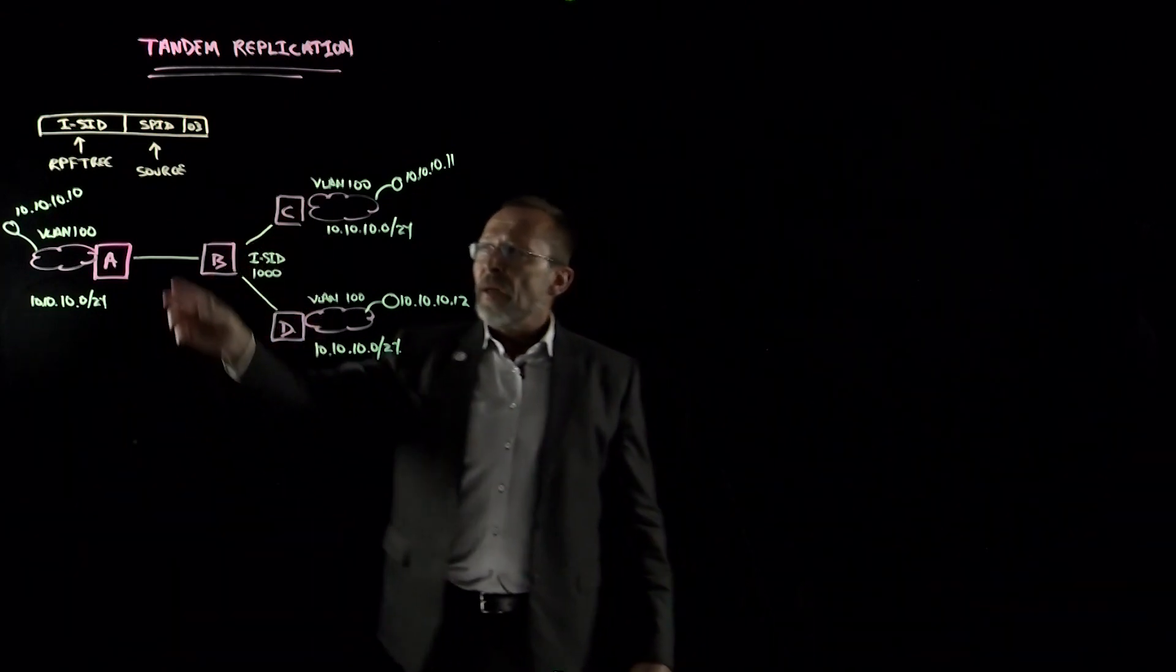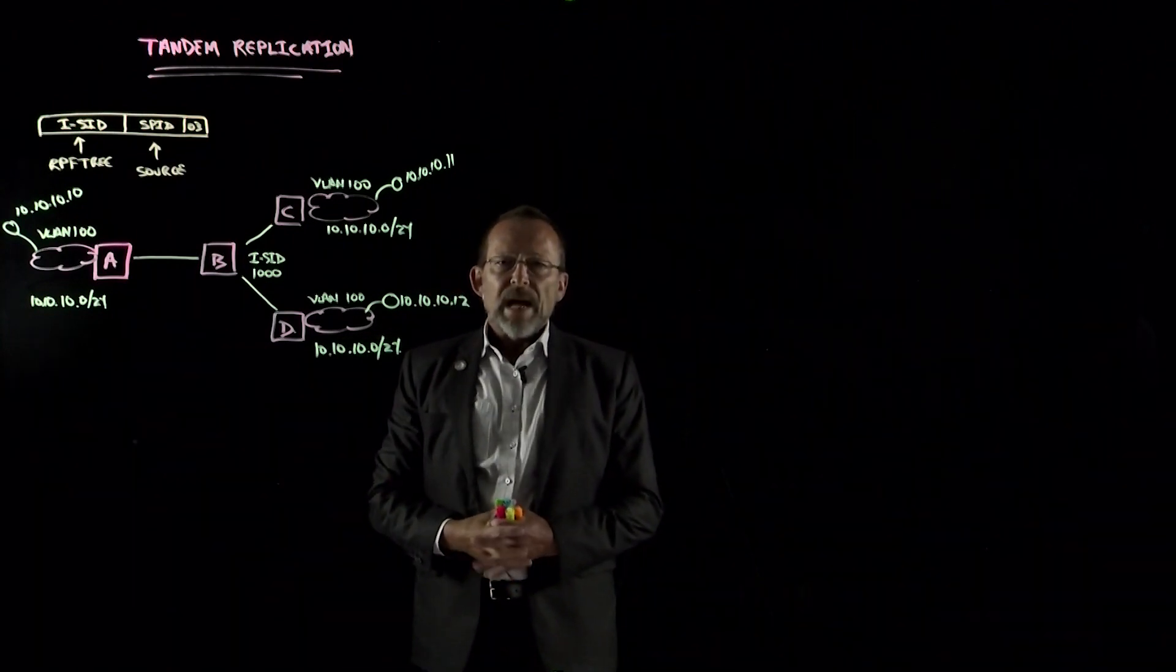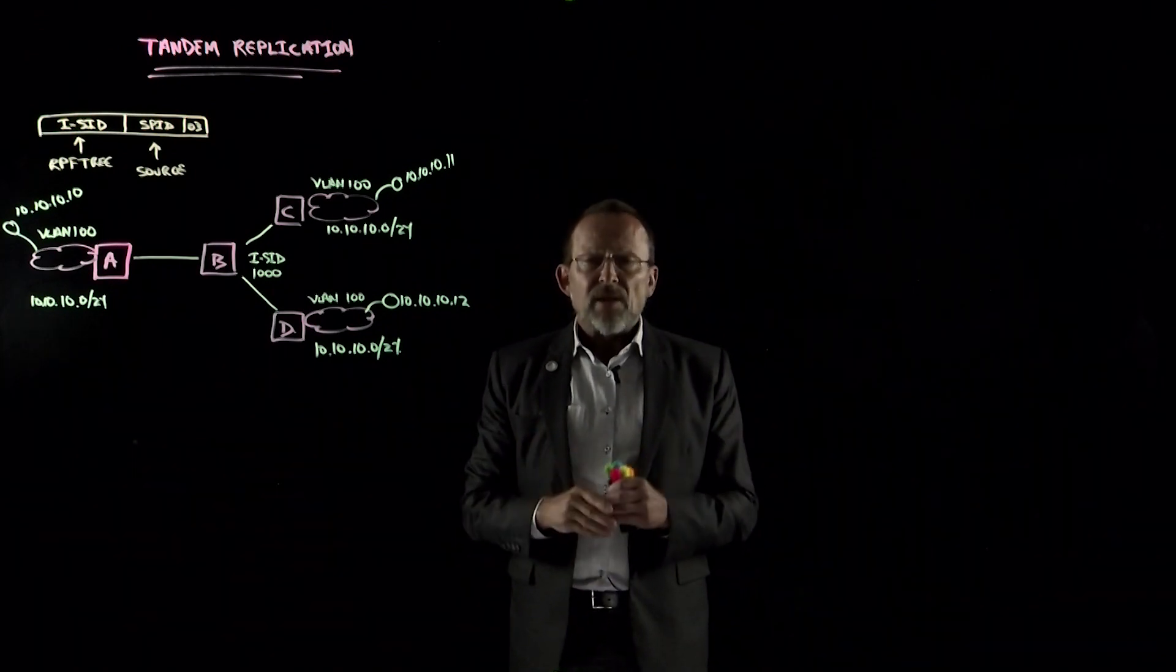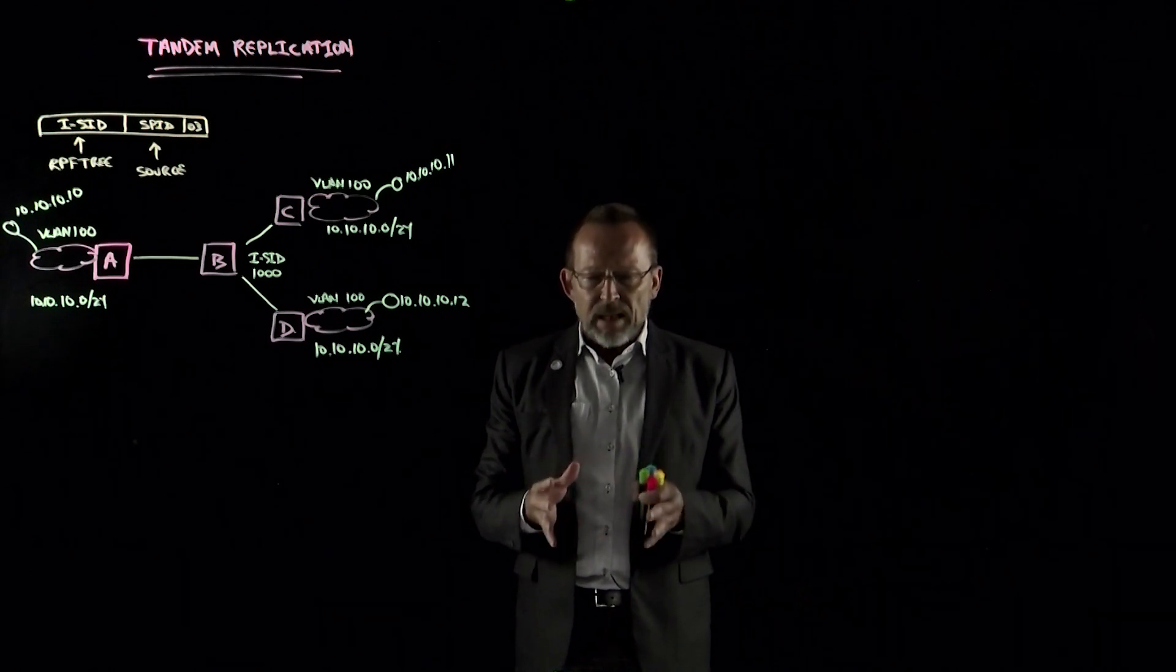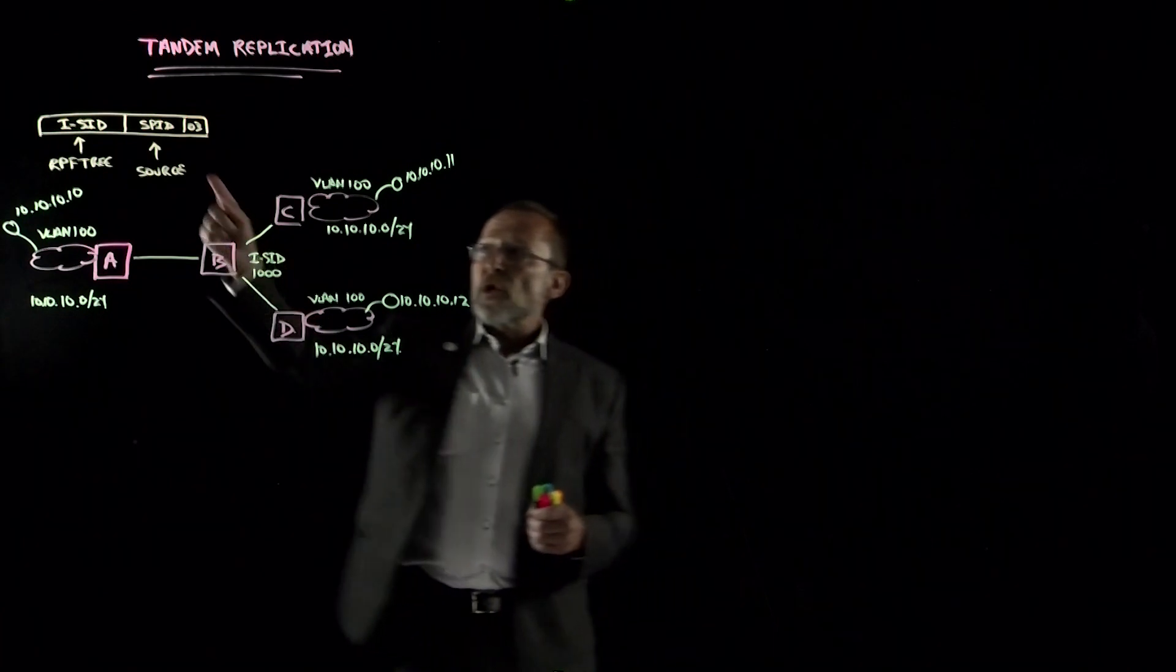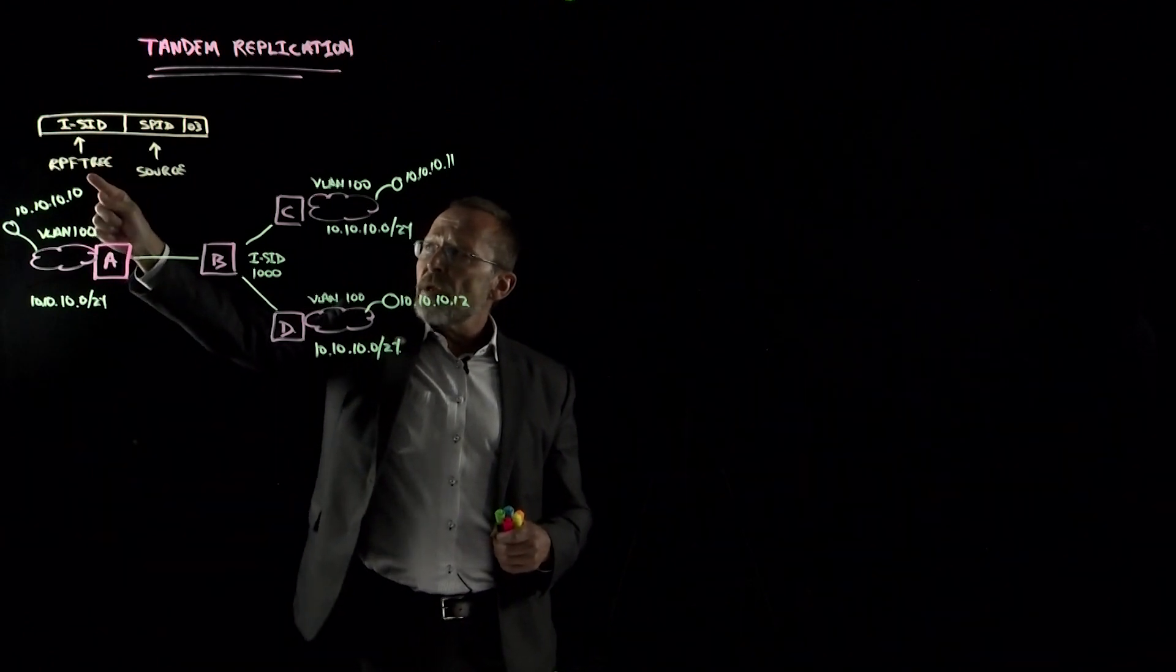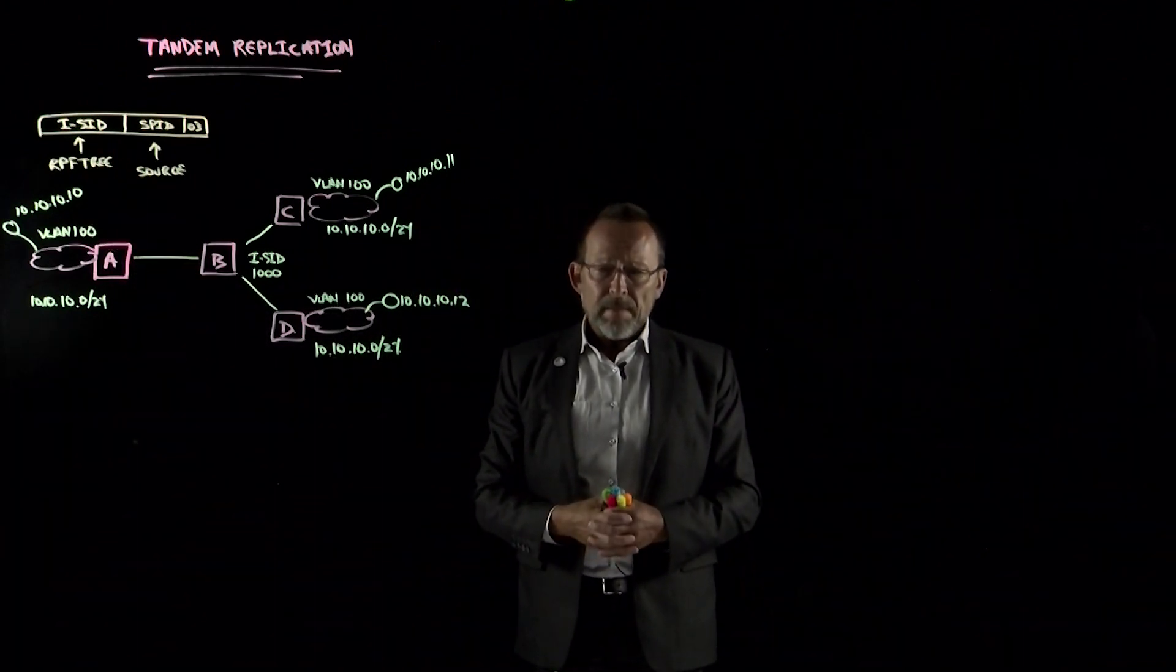If you will recall, we created something called a multicast backbone MAC address, and that included a special identifier to identify the fact that it is a multicast frame. We took information and embedded it into that actual address, things like the shortest path source ID, which gives us the source, and also the ISID information, which gives us the reverse path forwarding tree.